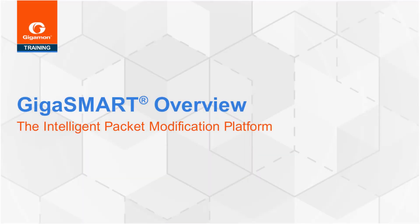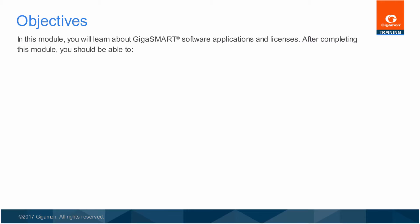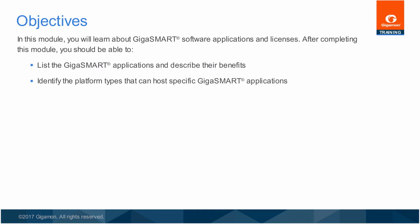Welcome to the GigaSmart Overview Training Module. In this module, you will learn about GigaSmart software applications and licenses. After completing this module, you should be able to list the GigaSmart applications and describe their benefits, identify the platform types that can host specific GigaSmart applications, and list the licensing options available for using the GigaSmart applications.